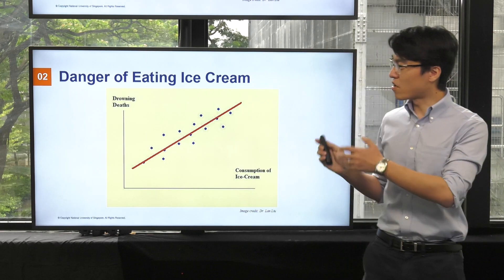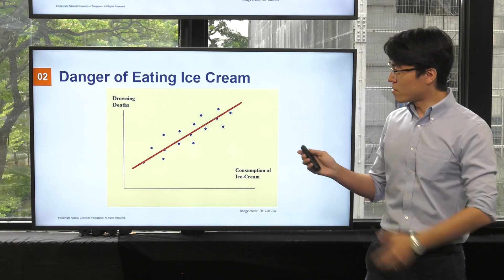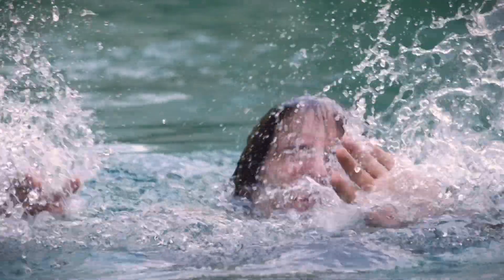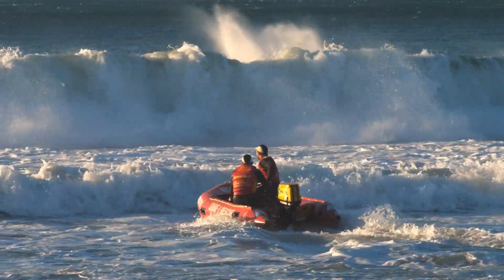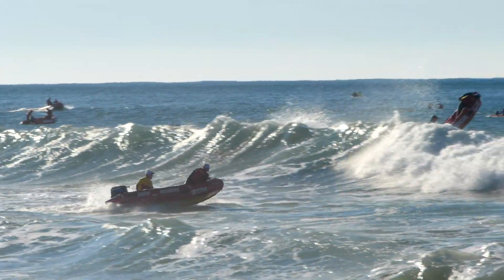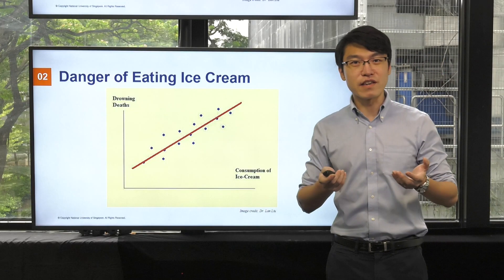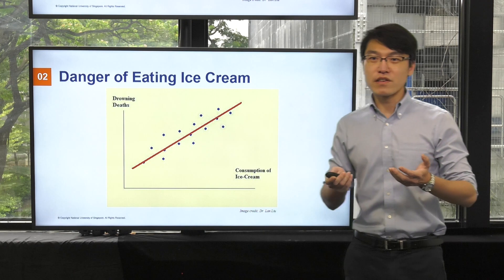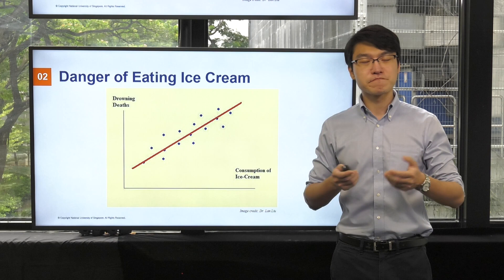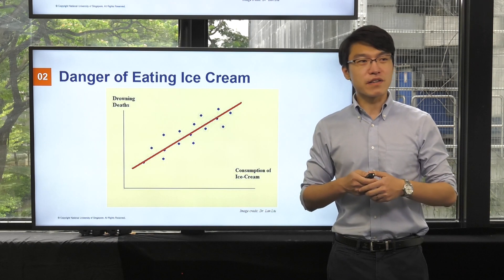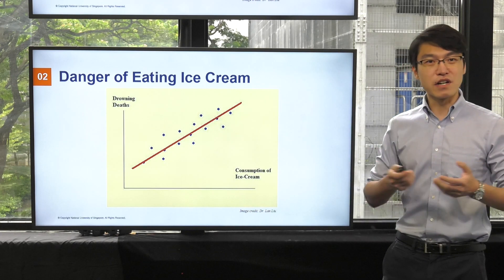So if we look at this scatter plot and think that drowning death is associated with the consumption of ice cream, and we mandate that ice cream be banned, will it lead to improvement in the number of drowning incidents? Obviously, the answer is no. This highlights the danger that if we just look at correlation in the observed data and make policies out of it, it might not lead to the intended result that we want.